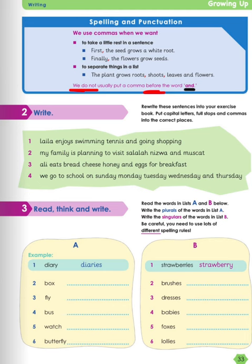Let's move on to number 2 — write. Rewrite these sentences in your exercise book. Put capital letters, full stops, and commas in the correct places. Let's solve one together. Layla enjoys swimming, tennis, and going shopping — we put the commas here. Number 2: my family is planning to visit Salalah, Nizwa, and Muscat — commas go here. Number 3: Ali eats bread, cheese, honey, and eggs for breakfast — commas after bread, cheese, and honey. Number 4: we go to school on Sunday, Monday, Tuesday, Wednesday, and Thursday — commas go here. The rules are very important — don't forget where to put the commas in the correct places.